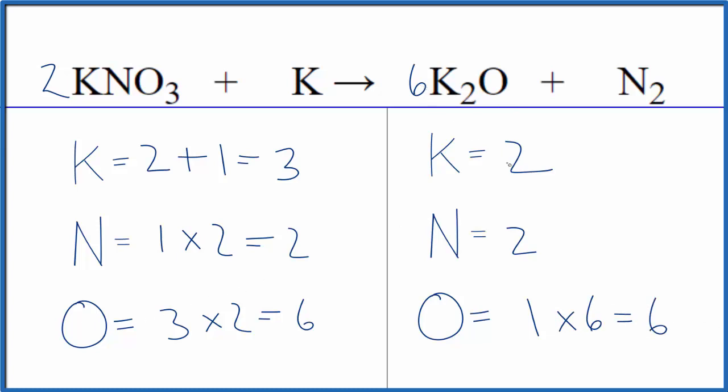Two times six for the potassium, that gives us twelve. So now we have twelve potassium atoms, but the nitrogens and oxygens are balanced.